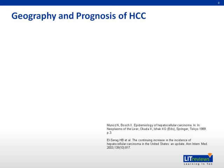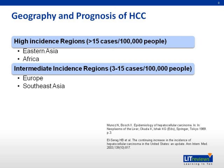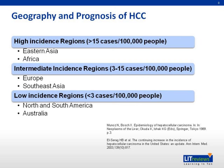Moving on to the geography and prognosis of hepatocellular carcinoma. The geographic distribution is heavily influenced by the frequency of hepatitis B and C. High incidence regions include Eastern Asia and Africa — Eastern Asia has an incidence of 35.5 per 100,000 people, and Africa has an incidence of 24.2 per 100,000. Intermediate incidence regions include Europe and Southeast Asia, while low incidence regions include the Americas and Australia. The median survival of HCC ranges from 6 to 20 months after diagnosis. The five-year survival for stage 1 HCC is 55%, stage 2 is 37%, and 16% or less for stage 3 and stage 4 hepatocellular carcinoma.